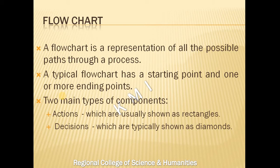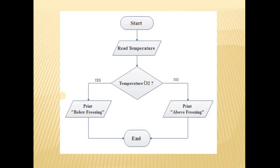Here is an example of a flowchart. There is one starting point and one end point. The rectangles — such as 'rate temperature,' 'print below freezing,' and 'print above freezing' — are the actions of the flowchart. The diamond shape represents a decision in the flowchart. Actions are rectangles and decisions are diamonds.